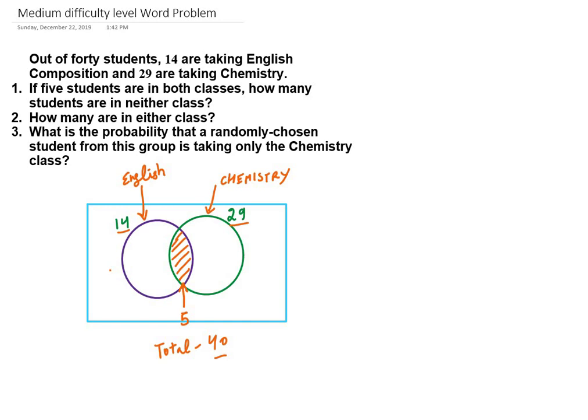Hello friends, let's look at this next word problem which is of medium difficulty. The problem statement is: out of 40 students, 14 are taking English, so we have a total of 40 students out of which 14